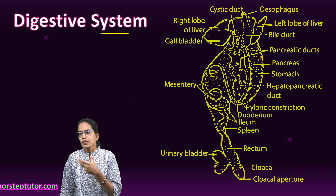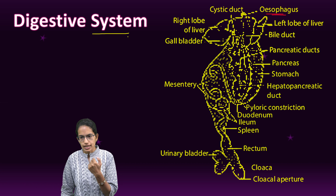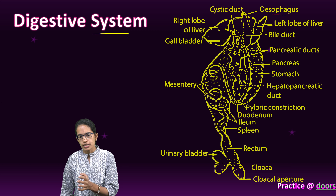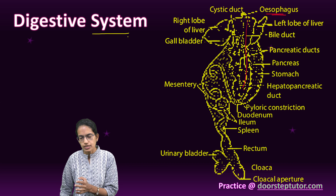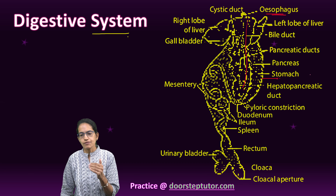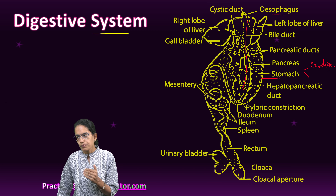The mouth opens into a bucopharyngeal cavity which opens into the esophagus and finally the gullet. This moves into the stomach. The stomach is beside the esophagus, as you can see — here is the esophagus running and here is the stomach.